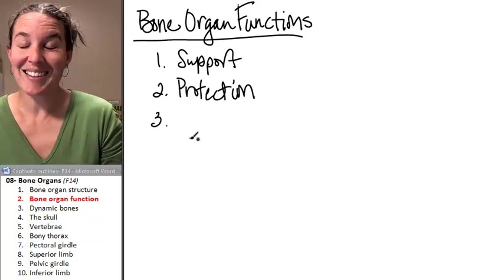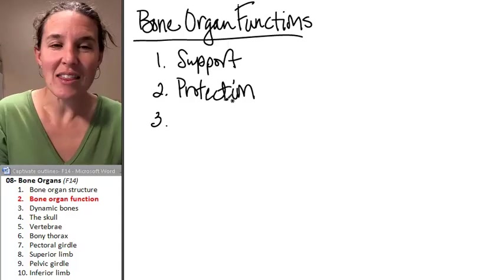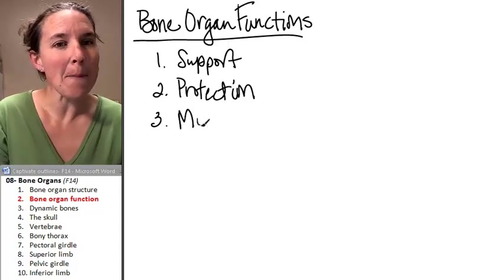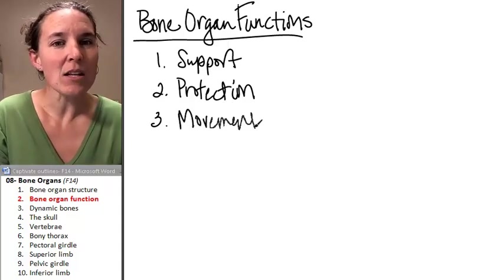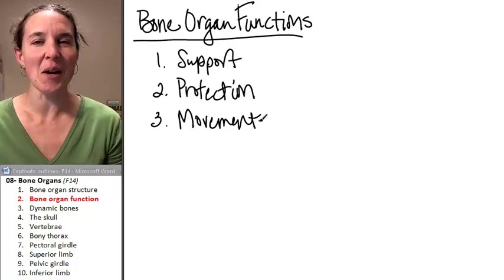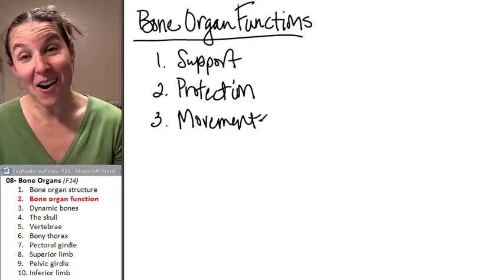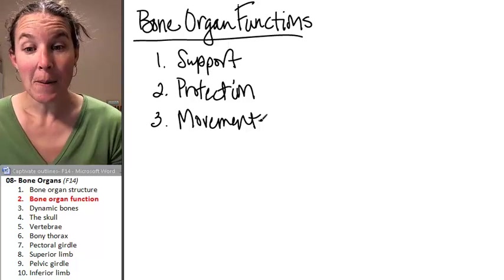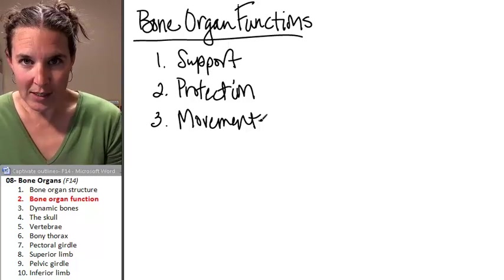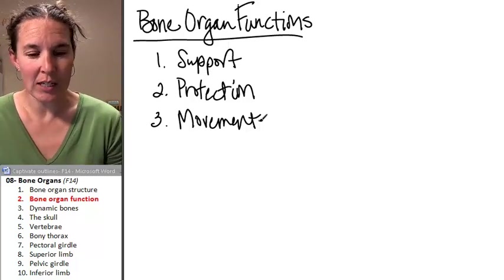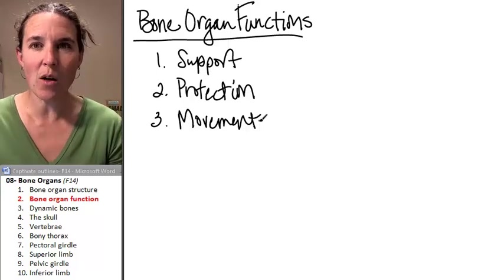The humerus is serving a different function. The humerus is involved in movement. So one of the functions of bones is actually movement. And this might be counterintuitive to you because you think of what is the tissue that's involved in movement. We all think of muscle.